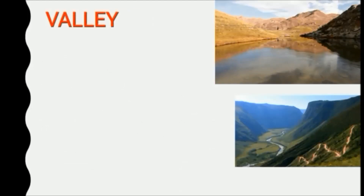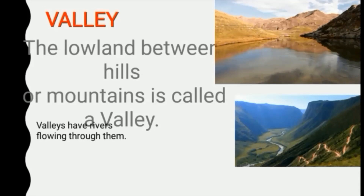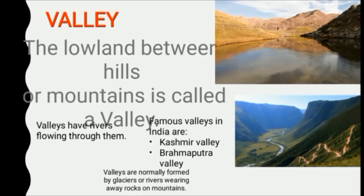What are valleys? Valleys are the low land between hills or mountains. Valleys are formed when water from the glaciers takes away rocks on mountains. Examples of valleys are the Kashmir Valley and the Brahmaputra Valley.